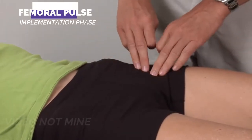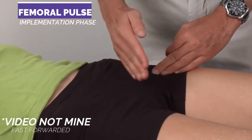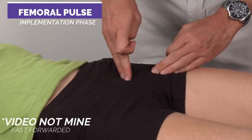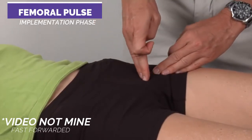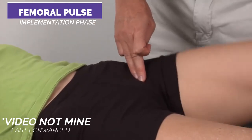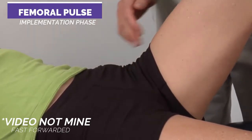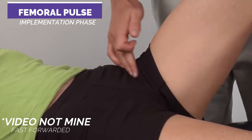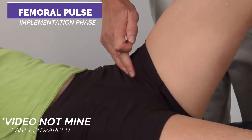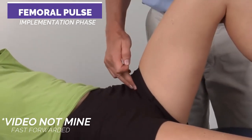We have now assumed a supine position, and we're going to locate the femoral artery. We're going to ask the patient to flex the knee to relax the artery, and then feel for the pulse.